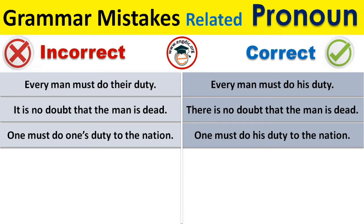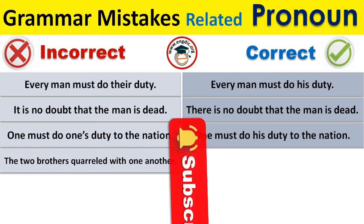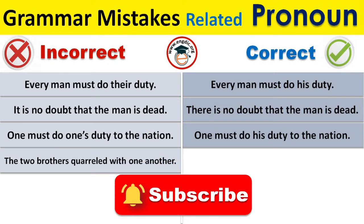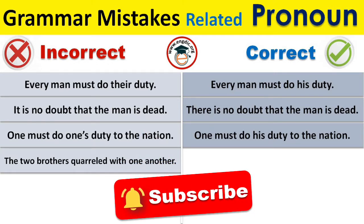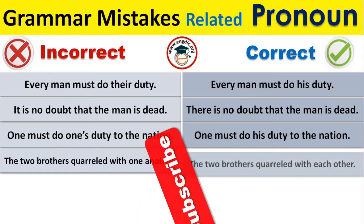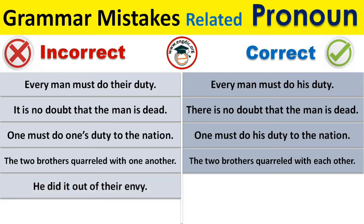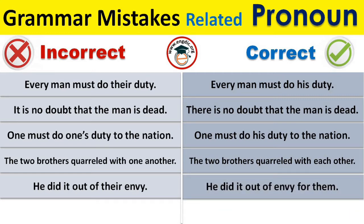'The two brothers quarreled with one another' is incorrect. The correct sentence is 'The two brothers quarreled with each other.' Additionally, 'He did it out of their envy' is incorrect; the correct sentence is 'He did it out of envy for them.'